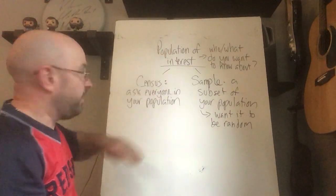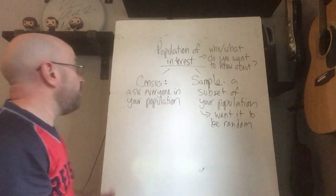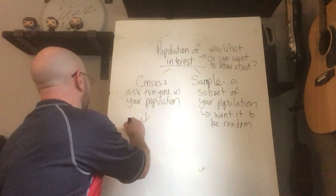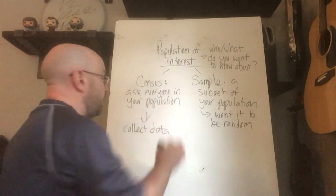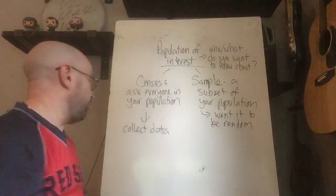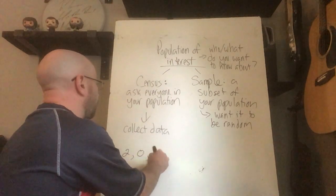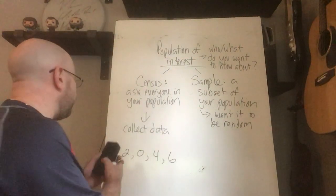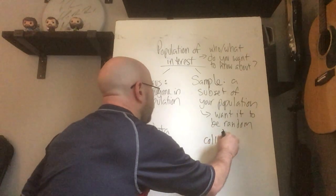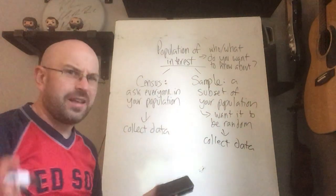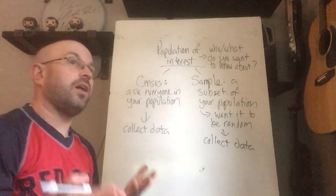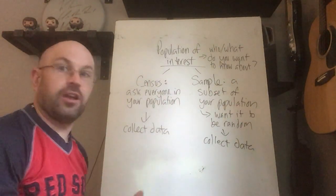So you have these two options: a population of interest where you can either ask everybody or ask a small group. If you do a census, you collect data from everybody. You ask everyone in Massachusetts how many Apple products they own and write down the data — maybe some people say two, zero, four, six. That's your data. If you do a sample, you do the same thing — collect data — but you'll get less data because you're asking fewer people. What you'll learn throughout this course is that you can take data from a sample, generalize it to your population, and make an inference and conclusion based on that.